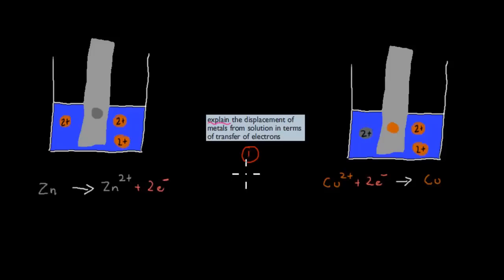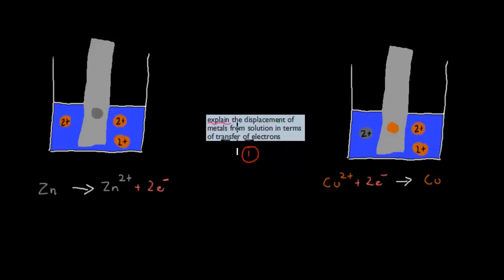Welcome to the summary video of the Electrochemistry and Battery chapter. In this video, I'm going to quickly go over all the dot points in a quite brief and concise manner. If you want a better understanding, I would recommend watching the actual videos themselves. I'll go through each dot point, and the numbers below it always correspond to the actual videos.